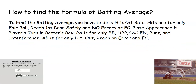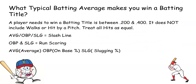What typical batting average wins a batting title? A player needs a batting average between .200 and .400 or more to win a batting title. It does not include walks or hit-by-pitch, and treats all hits as equal. On-base percentage plus slugging percentage equals the slash line, and on-base percentage plus slugging percentage correlates to run scoring.